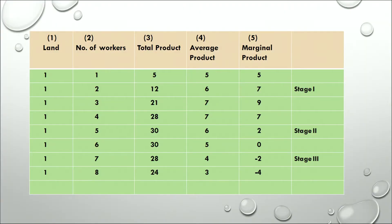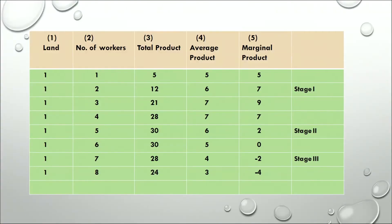We have a table to explain this law and all three stages. In column 1, we have land — we can see that we have only one unit of land as it is a short-term concept. In the second column, we have the number of workers, which keeps increasing as it is a variable factor. We can increase the variable factor along with the fixed factor, which is land. In the third column, we have total product; in the fourth, we have average product; and in the next, we have marginal product. We will now discuss all three stages with the help of this table.